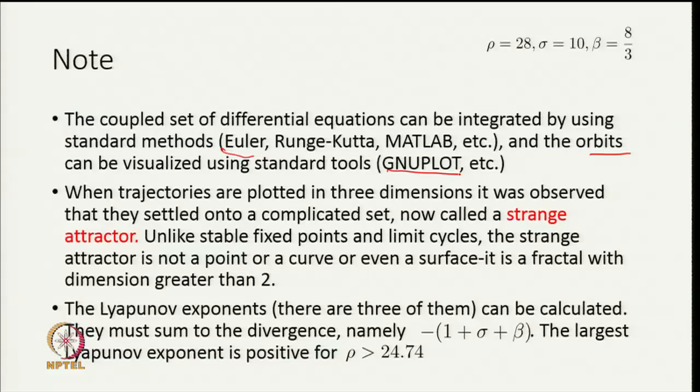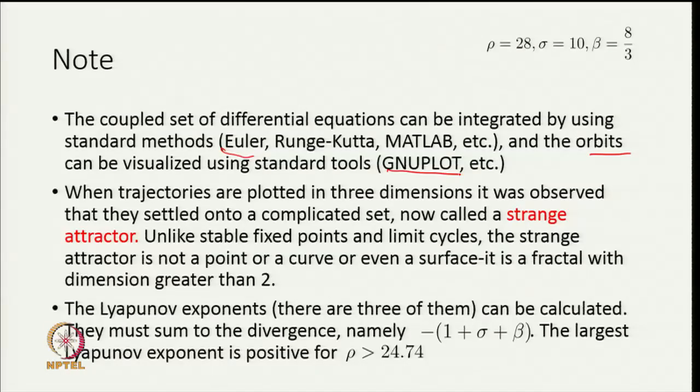When you plot these trajectories in three dimensions they settle onto a complicated set which is nowadays termed a strange attractor. One can show that you have this kind of complicated behavior because the fixed points are unstable, there are no periodic orbits. This object is a limiting object, but it is not a curve, not a point, not a simple closed curve and not even a surface. As it happens it is a fractal with a dimension a little greater than 2. Because it is a fractal and motion on it does not repeat, you have an example of an attractor on which the dynamics is chaotic.